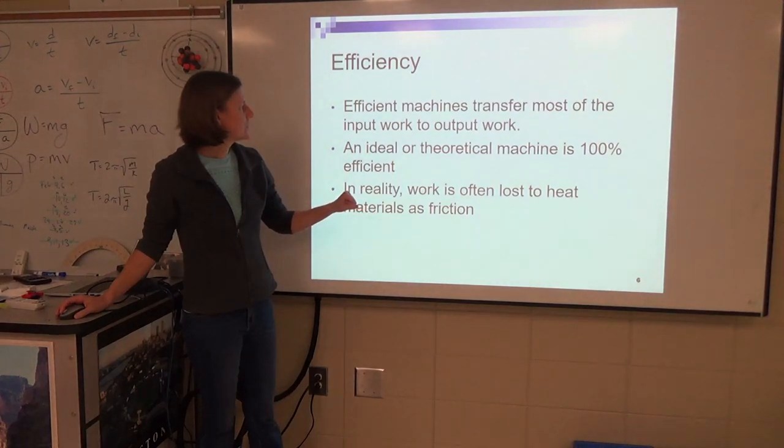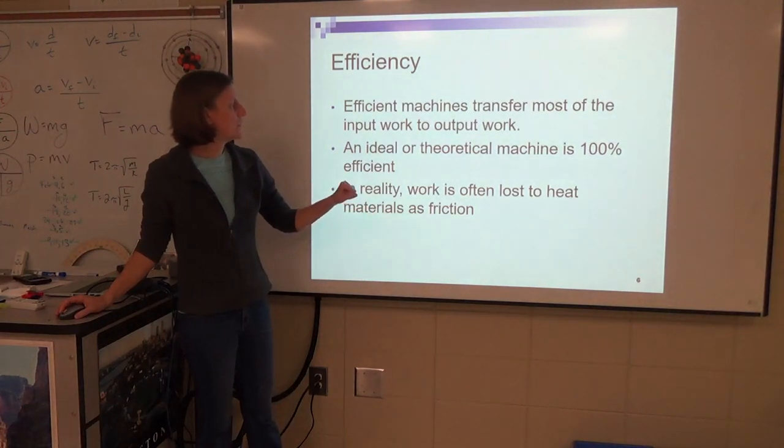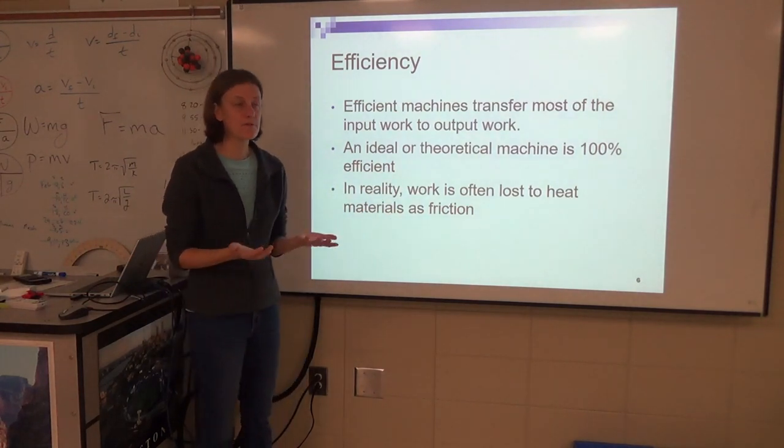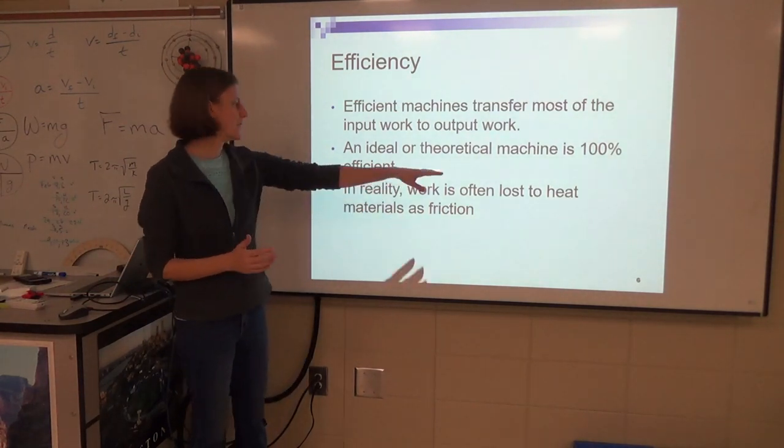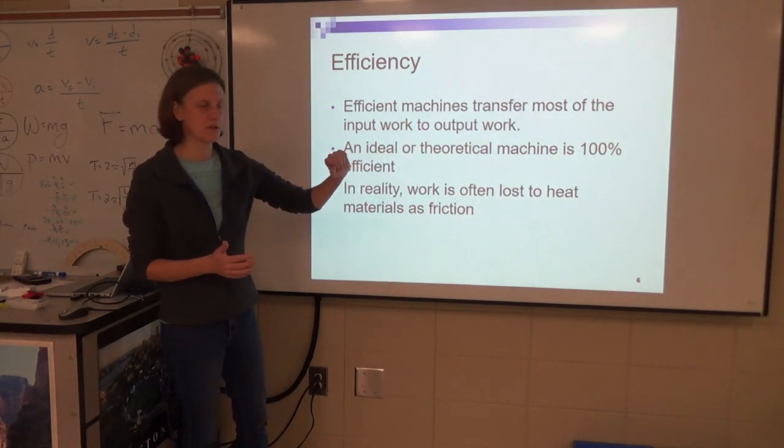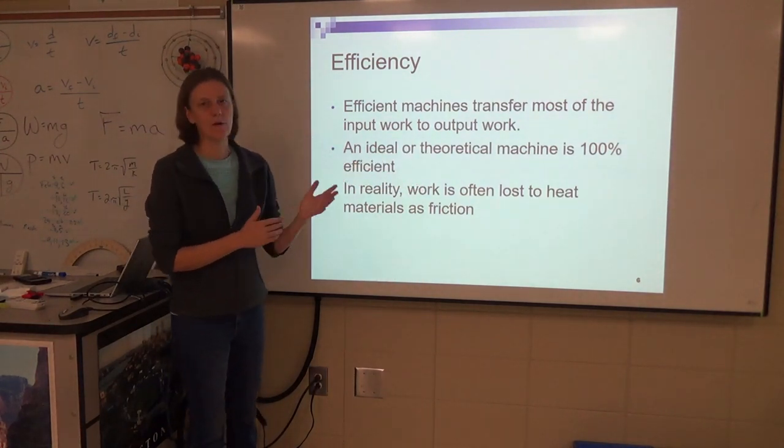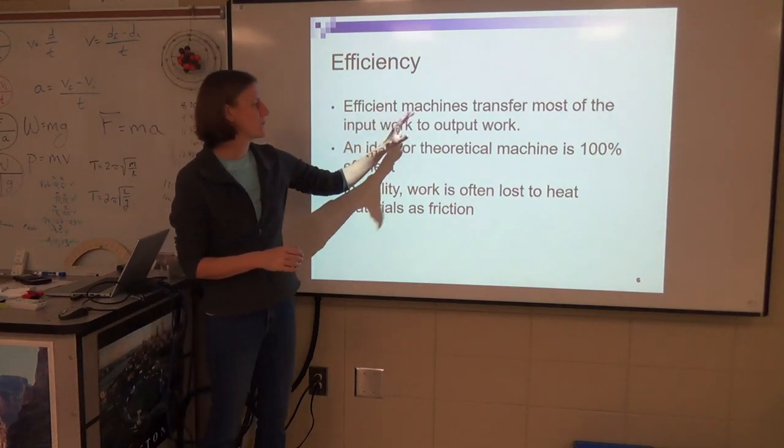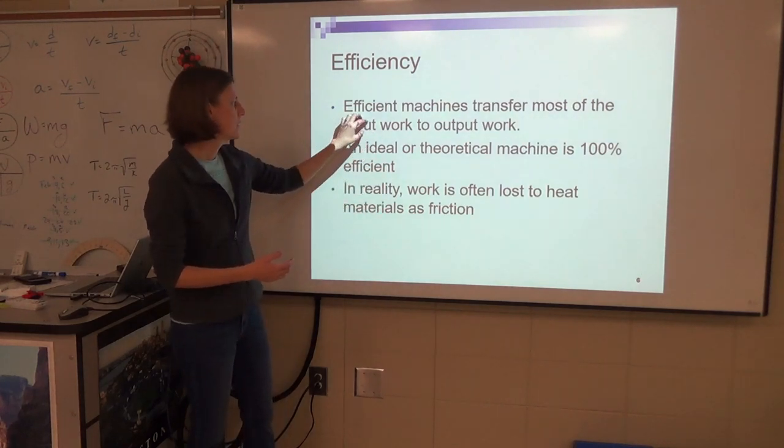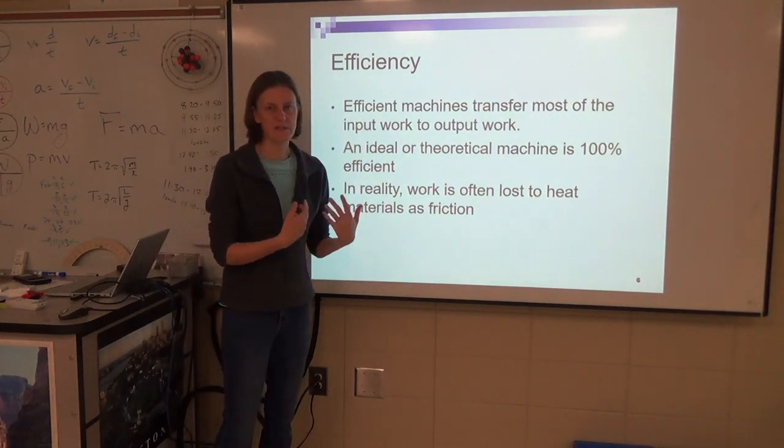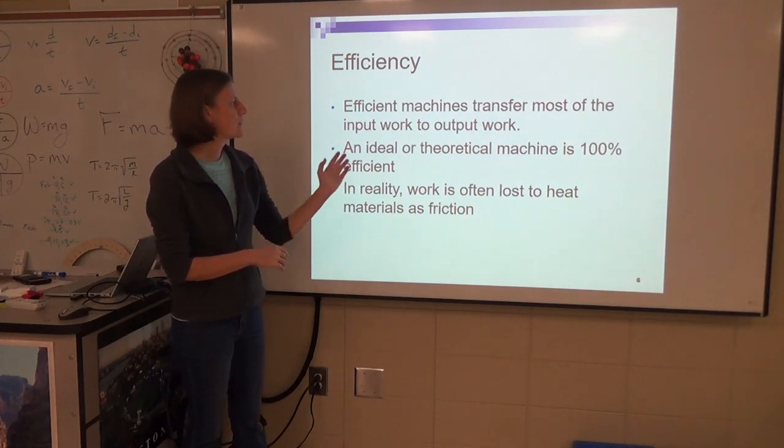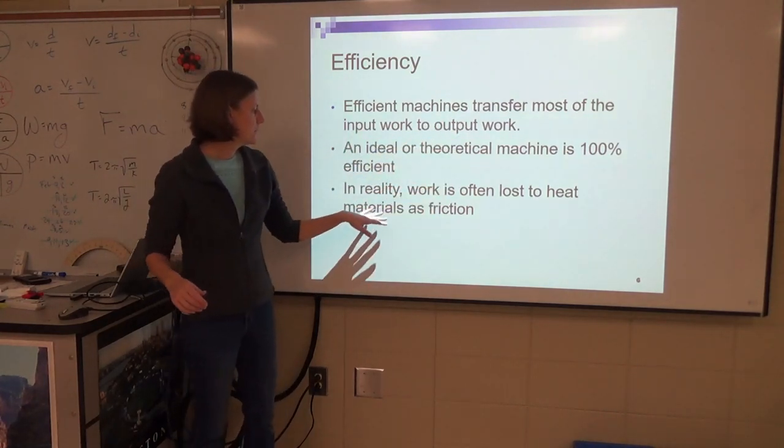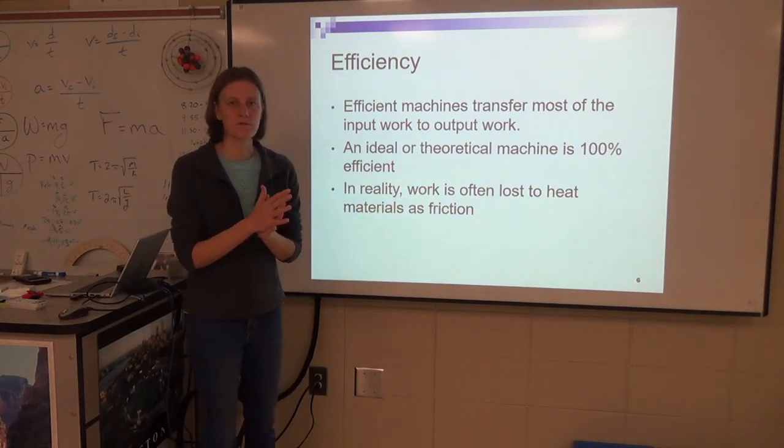And then lastly, efficiency. We know that nothing is truly 100% efficient. Certain things can be more or less efficient, but we could never get really a 100% efficient machine. We always get out a little less than what we put in. So efficient machines transfer most of that input work—input meaning what goes into the system, possibly what a person is doing.